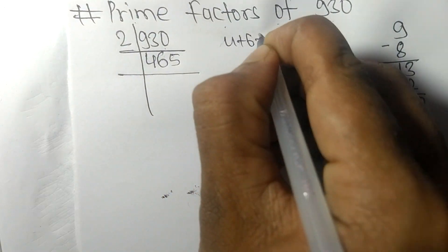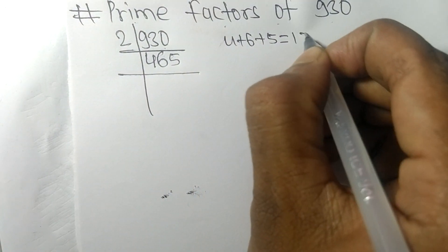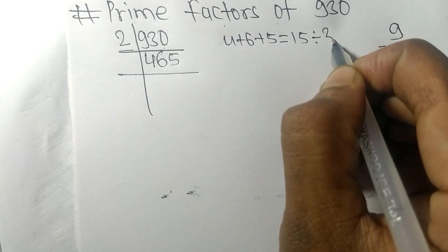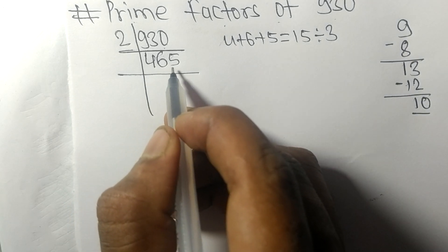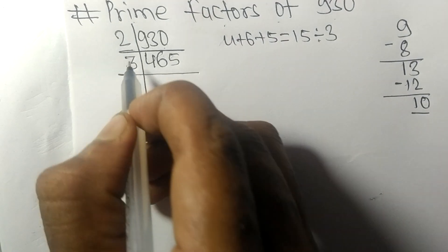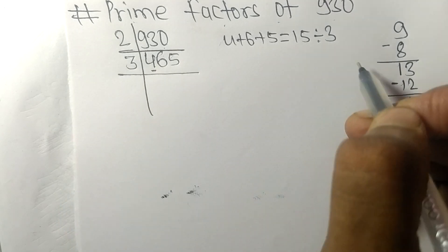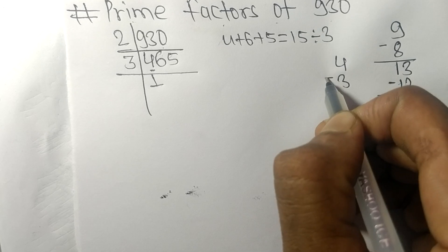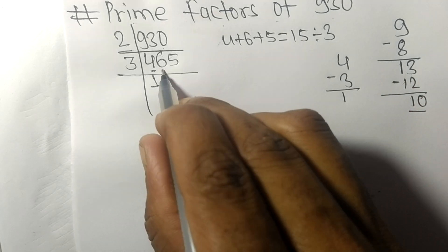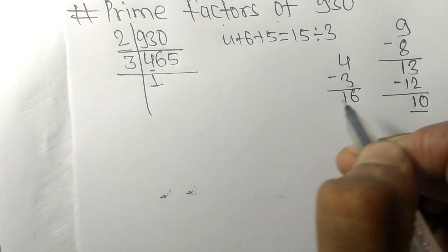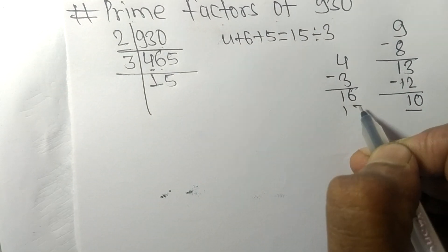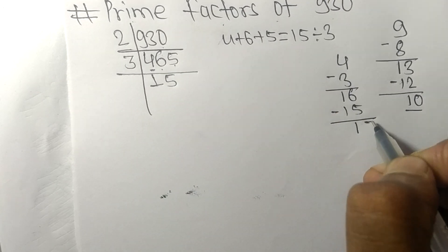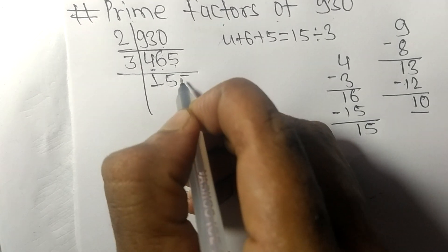When we add all the digits of 465, that is 4 plus 6 plus 5, we get 15, and 15 is exactly divisible by 3. So 465 is also divisible by 3. Dividing: 3 times 1 is 3, subtracting from 4 gives 1, bring down 6 to get 16. 3 times 5 is 15, subtracting gives 1, bring down 5.